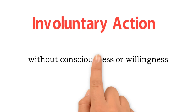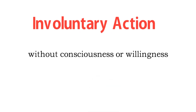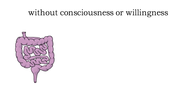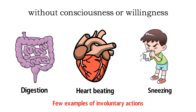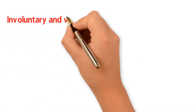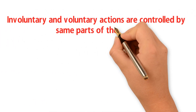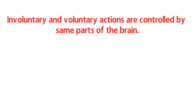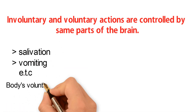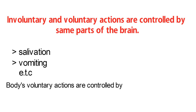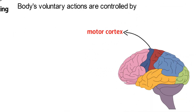Involuntary actions are actions which take place without the consciousness or willingness of an individual. Examples include digestion, heartbeating, and sneezing. Both involuntary and voluntary actions are controlled by the same parts of the brain. The hindbrain and midbrain control involuntary actions like salivation and vomiting. All of the body's voluntary actions are controlled by the motor cortex in the frontal lobe of the cerebrum.